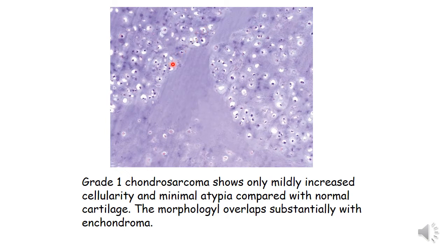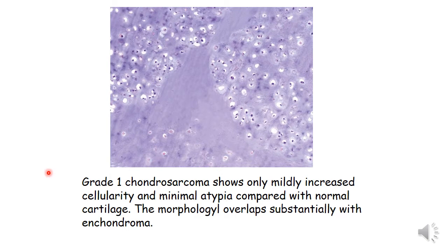In grade 1 chondrosarcoma, the chondroid matrix cellularity is only mildly increased compared to normal cartilage. Chondrocytes are found in lacunae; nuclei are small and of equal size. There are no binucleated cells, no mitosis, and no pleomorphism. This picture can completely resemble a benign enchondroma. Grade 1 chondrosarcoma shows only minimal increased cellularity, and its morphology overlaps substantially with enchondromas.